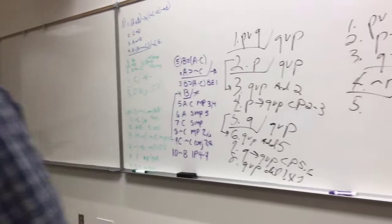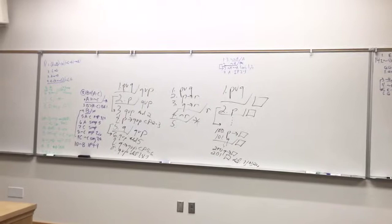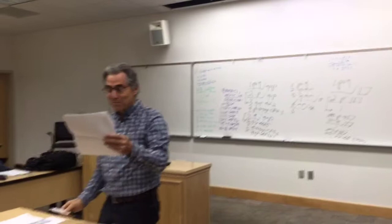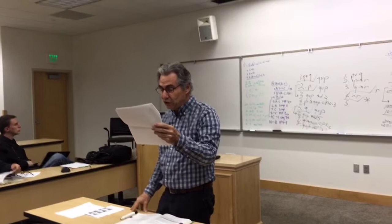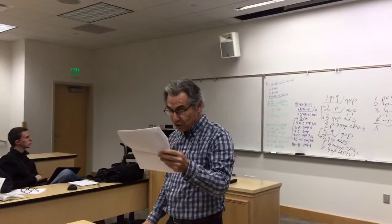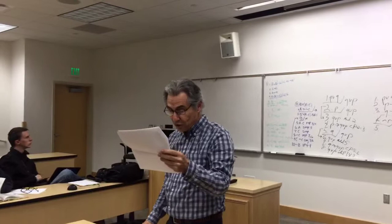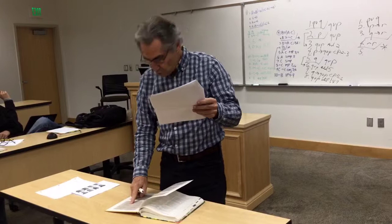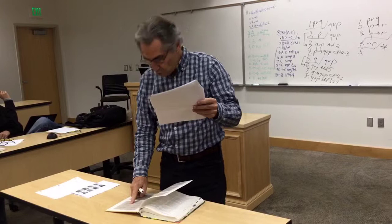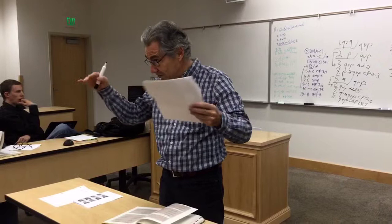So look at the assignment for Wednesday: prove dilemma using the basic rules — that's one you need to do. Then prove five of the following using the basic rules and dilemma with the strategy of proof by cases: commutation — the or version in one direction, which we just did. Then do association. If you look at the back of the text you'll find all these things — association is the or version: P or (Q or R) is the same as (P or Q) or R.